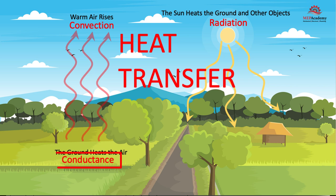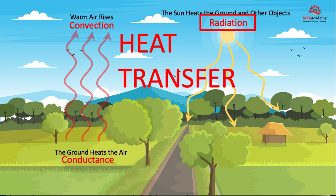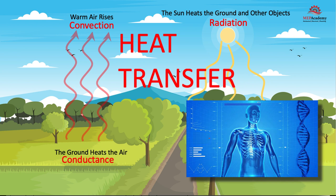There are three basic methods by which heat transfers to and from objects. We'll explain these three methods and how they're used in the heating and cooling loads for the sizing of air conditioners and how heat is transferred to and from humans.